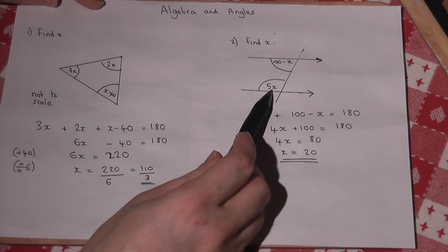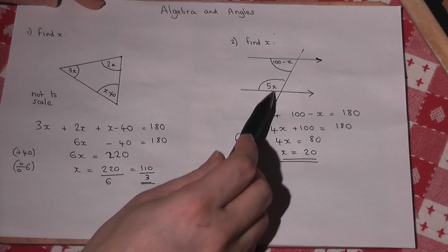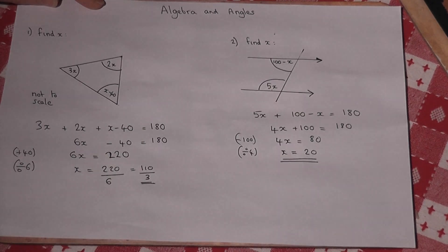So this angle, 5 times 20 is 100. This one, 100 take away 20 is 80.